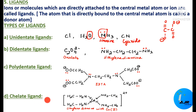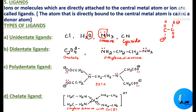A chelate ligand is a didentate or polydentate ligand which forms 2 or more coordinate bonds with a central metal atom in such a way that a 5 or 6 membered ring is formed. For example, ethylenediamine (CH₂-NH₂-NH₂-CH₂) is a didentate ligand that forms 2 coordinate bonds with the central metal atom, resulting in a chelate ring — that is why it is called a chelate ligand.